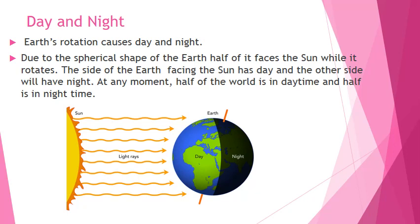Day and Night: Earth's rotation causes day and night. Due to the spherical shape of the Earth, half of it faces the Sun while it rotates. The side of the Earth facing the Sun has day, and the other side will have night. At any moment, half of the world is in daytime and half is in night time.